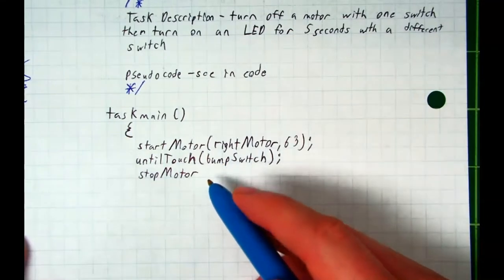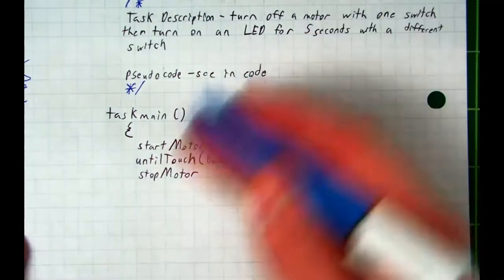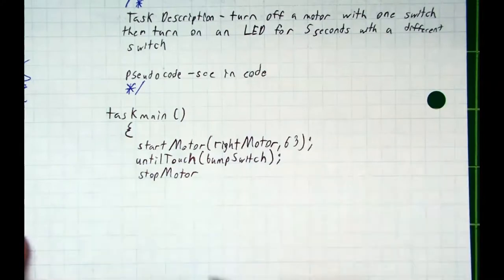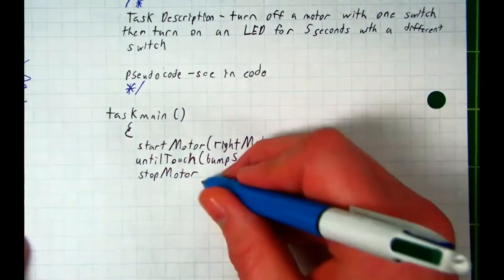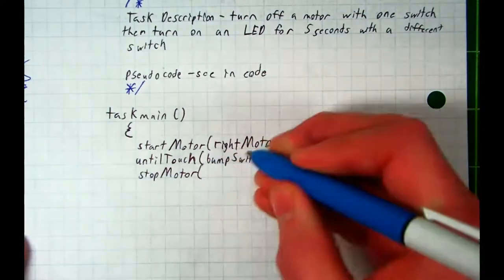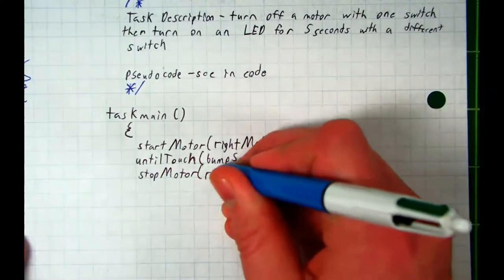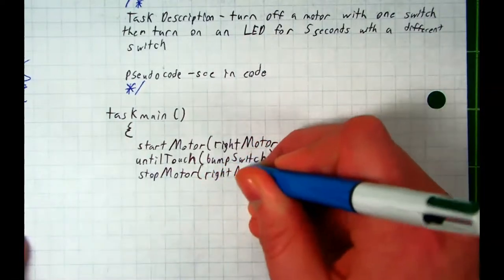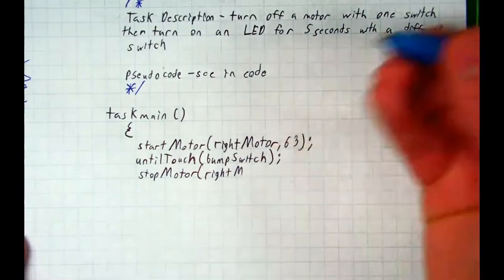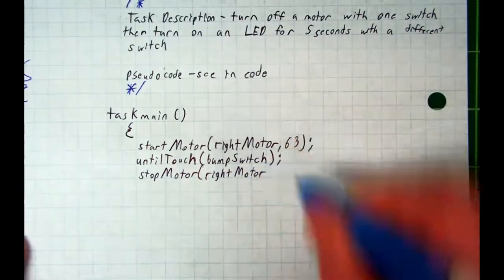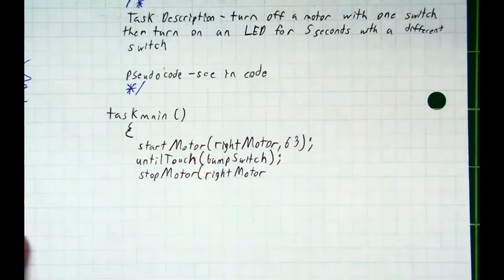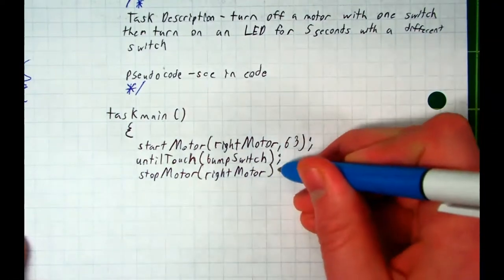As you're working on activity two and activity three, this will become incredibly obvious how to write these commands. And then what motor do we want to stop? Right motor. So open your parentheses, lowercase right, uppercase motor or M, motor I should say. Do I need a speed? No. Close your parentheses, write a semicolon to end the commands.